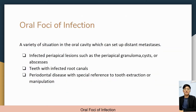In oral focal infection, there are a variety of situations in the oral area which can set up distant metastasis. The first is infected periapical lesions such as the periapical granuloma, periapical cysts, or periapical abscess. The second is teeth with infected root canals. The last is periodontal disease, with special reference to tooth extraction or manipulation.